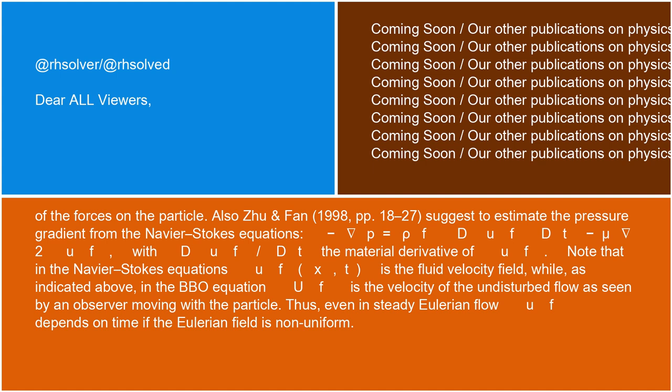Note that in the Navier-Stokes equations u_f(x,t) is the fluid velocity field, while as indicated above, in the BBO equation u_f is the velocity of the undisturbed flow as seen by an observer moving with the particle. Thus, even in steady Eulerian flow, u_f depends on time if the Eulerian field is non-uniform.